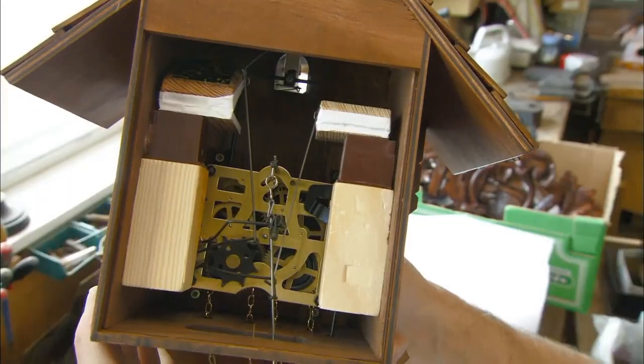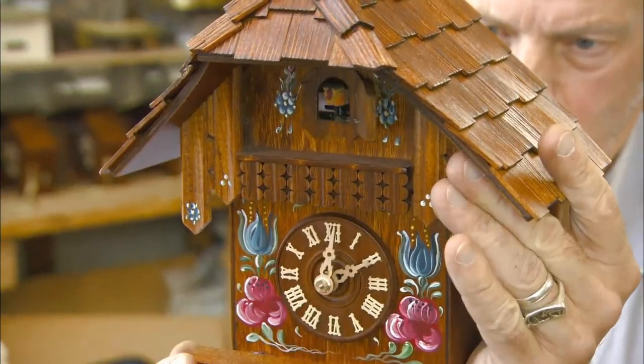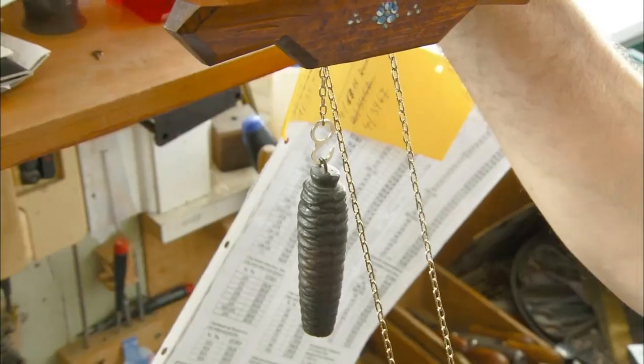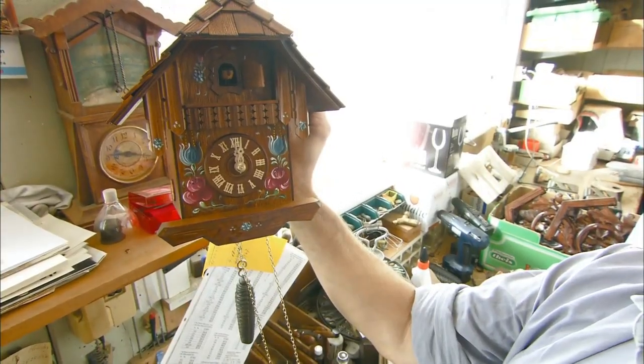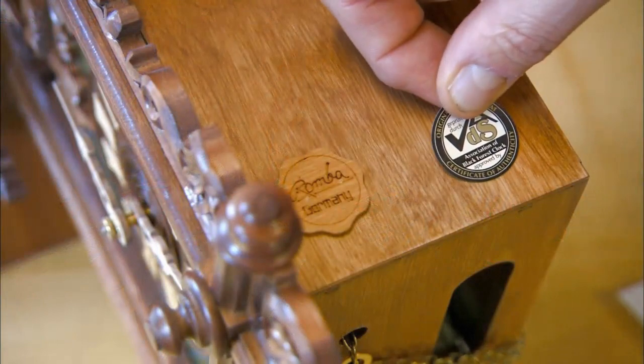Winding up the clock raises the chain, pulling up the weight on the end. As the weight falls back down gradually, it pulls the chain which turns the movement, which drives the hands of the clock. The pendulum regulates the pace.